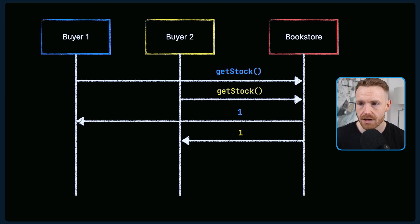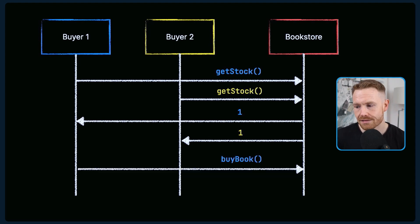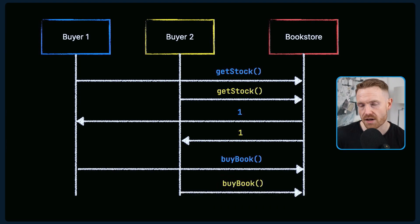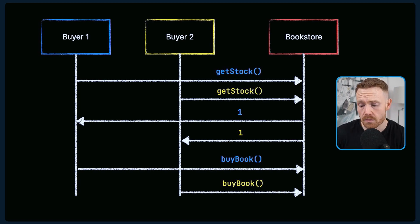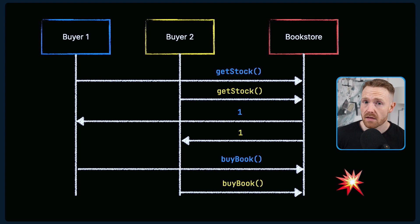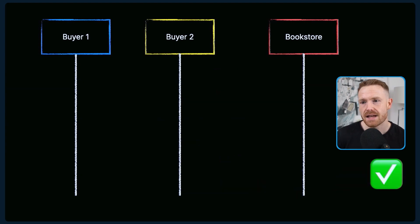So naturally buyer one wants to buy that book and that transaction goes through absolutely fine. But then buyer two also wants to buy that book, and at this point the bookstore doesn't have a book to sell. So it's all gone horribly wrong. Is there a better way of dealing with this? Yes, there is.